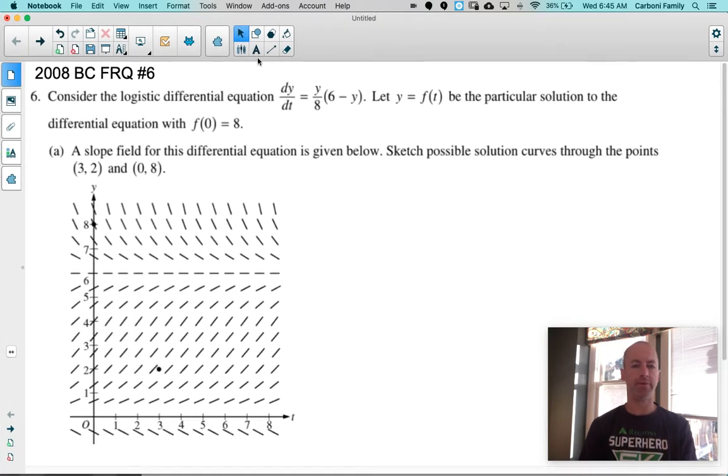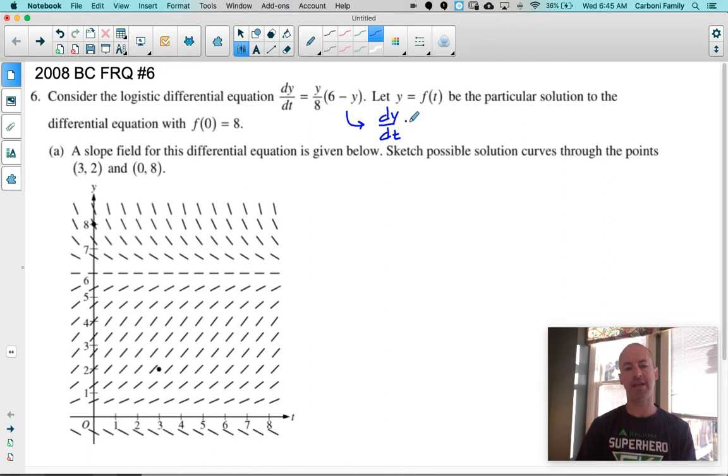Okay, the 2008 BC number six, probably one of the easier number sixes in recent years if you consider 2008 recent. We have a logistic differential equation. They give you an initial condition f of zero is eight for the function f. And I prefer my logistic equations to look a little bit different than this. Some teachers teach this as a standard form. I prefer my logistic models to look like this. So dy dt, I'm going to factor that six out. And so that'll be three fourths y times one minus y over six.